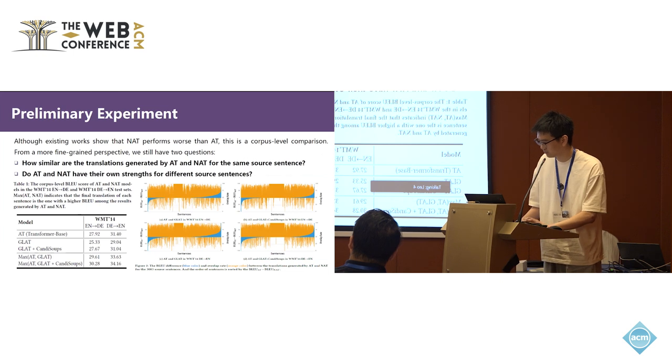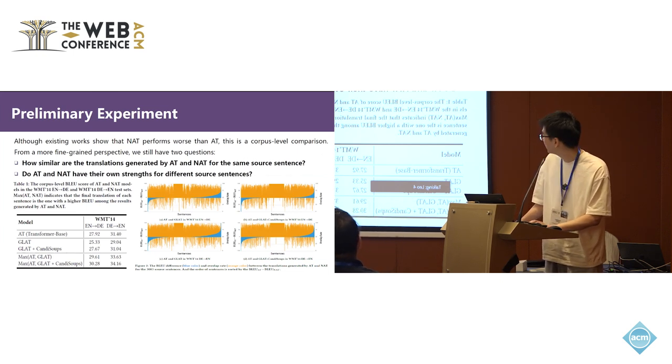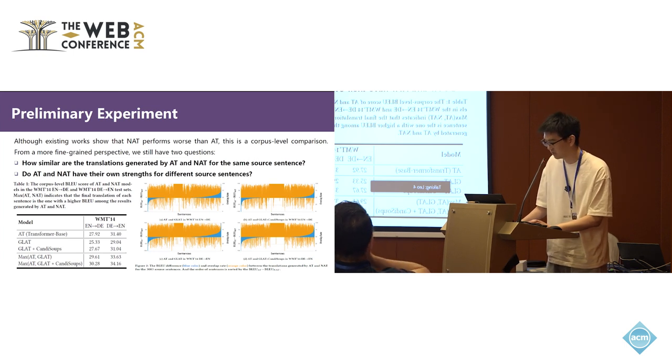Table 1 shows the AT mode and two NAT modes, as well as the performance of using the two. The meaning of the max function is to select the higher BLEU score between AT and NAT as the final translation. As we can see, even GLAT whose performance is far worse than AT can still significantly improve the final translation quality by performing the max operation with AT.